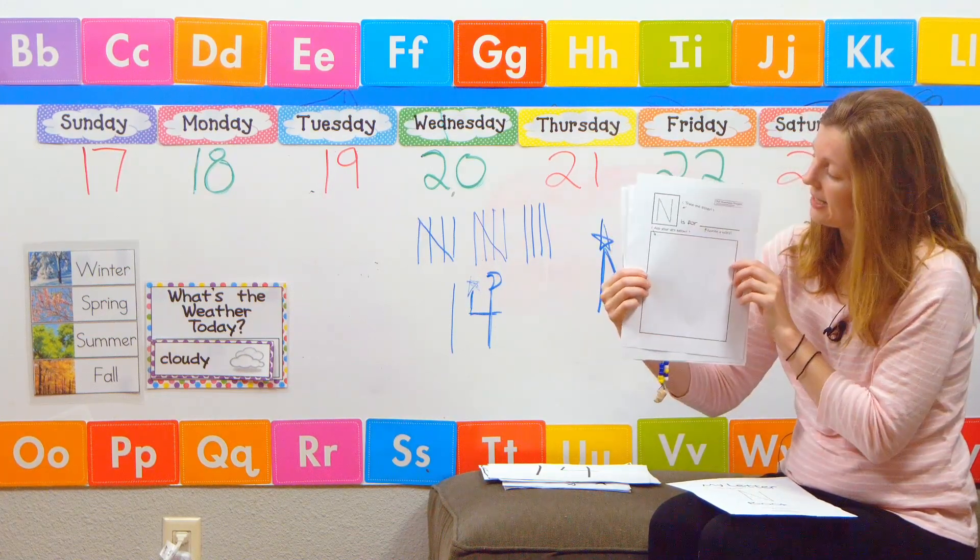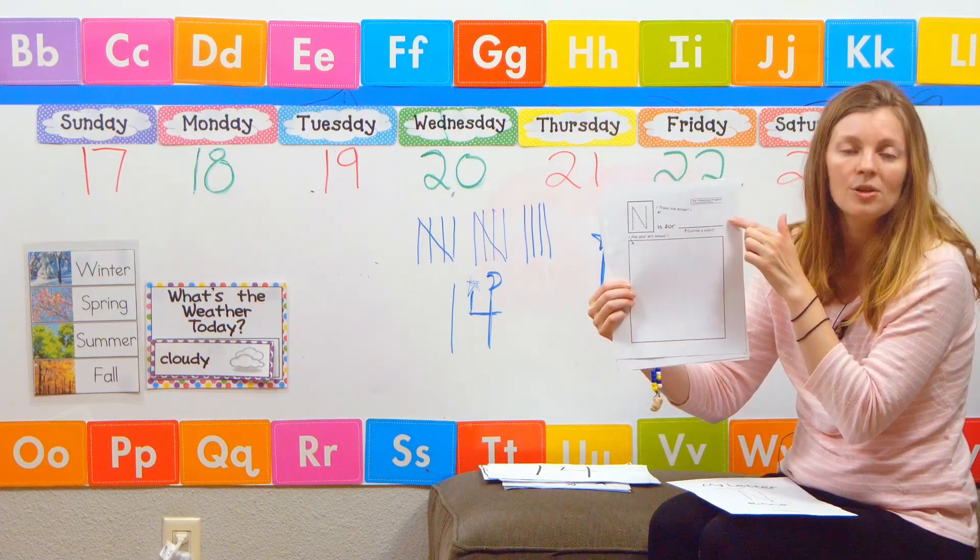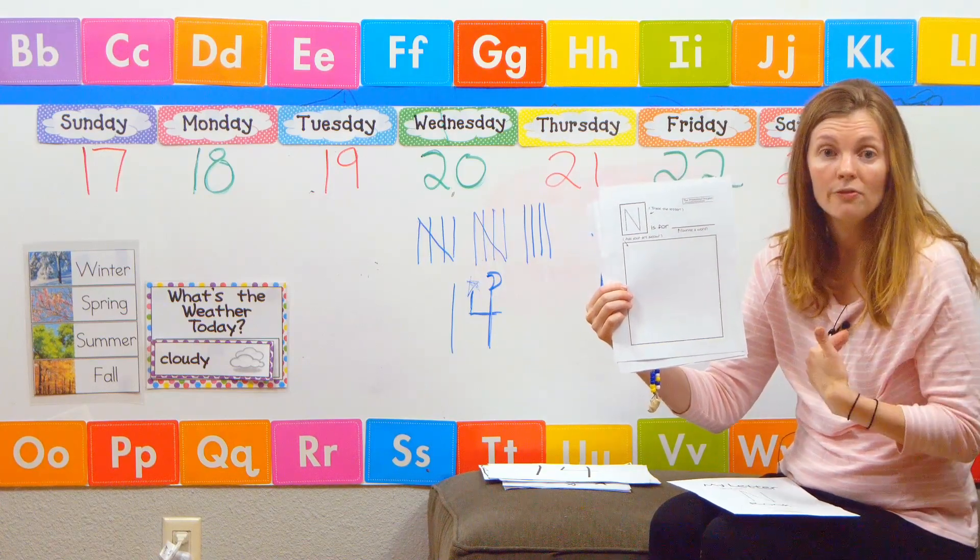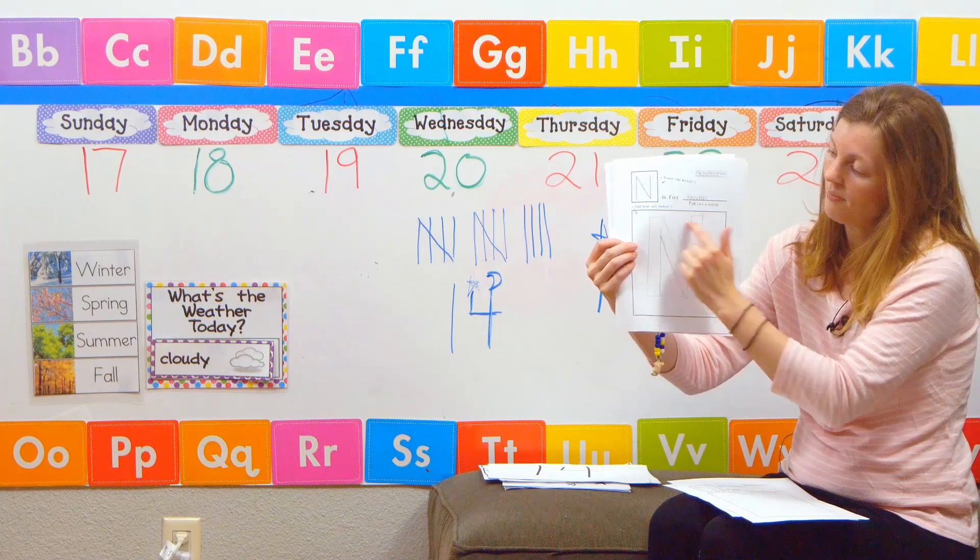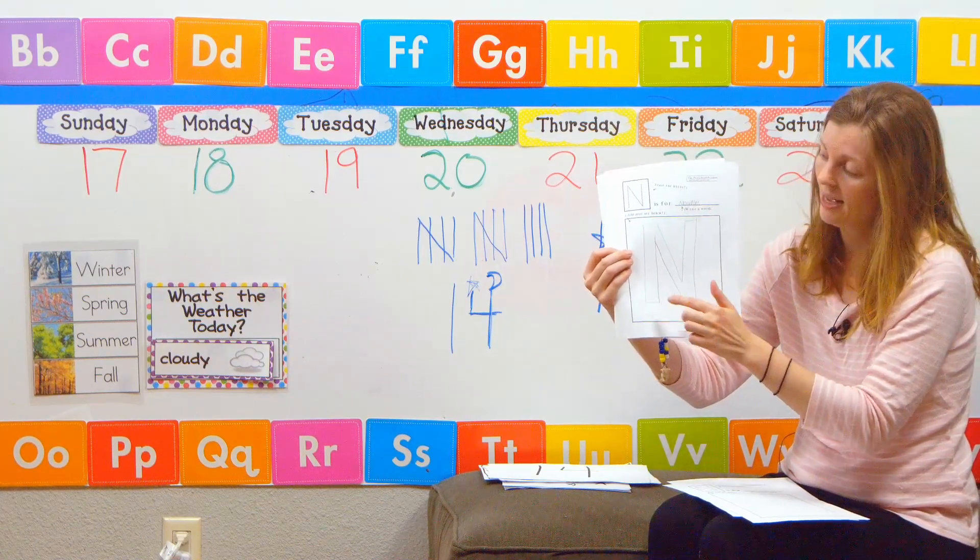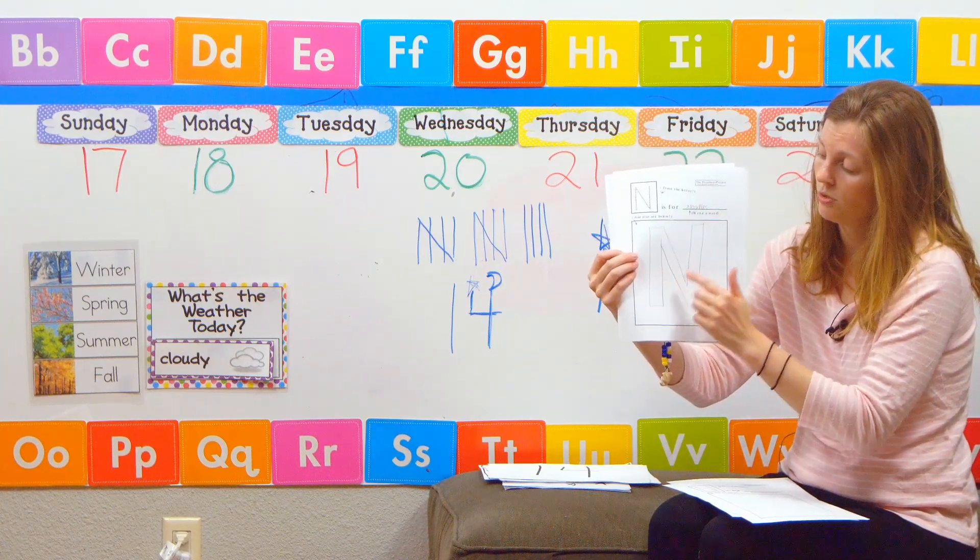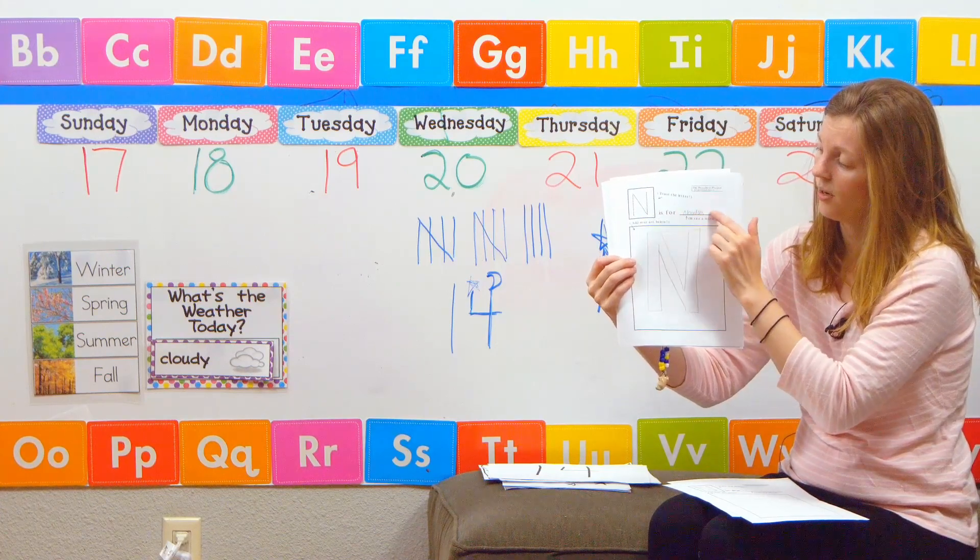You can trace your letter N. And it says N is for. And you can either fill it in yourself or you can follow along with us. So on Monday, we made a big bubble letter N. And then we are going to glue some noodles on it. It says N is for noodles.